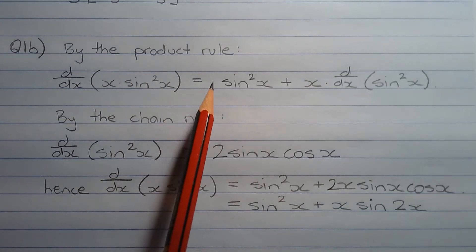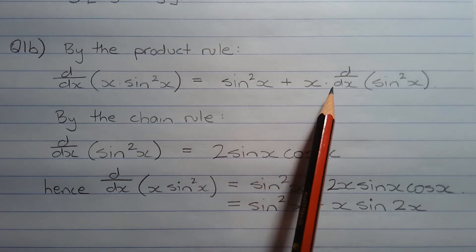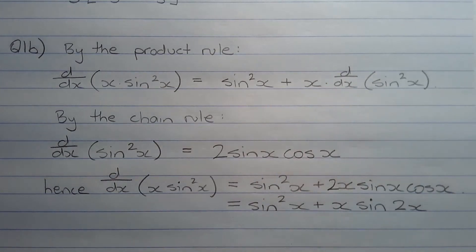So applying the product rule, we have sine squared x plus x multiplied by the first derivative with respect to x of sine squared x.